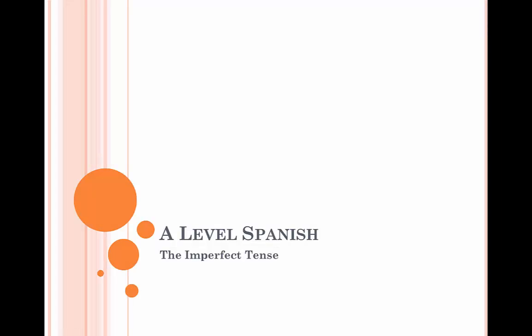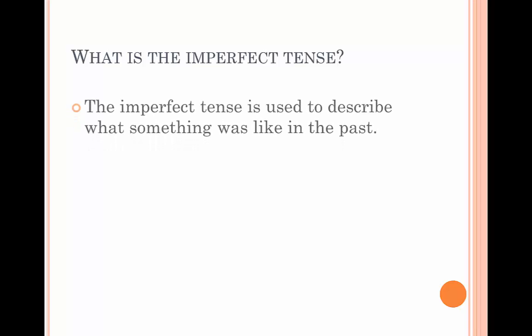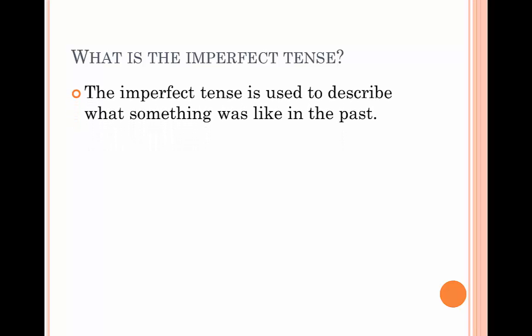How to form the imperfect tense in Spanish. What is the imperfect tense? The imperfect tense is used to describe what something was like in the past, so in other words it's a past tense.